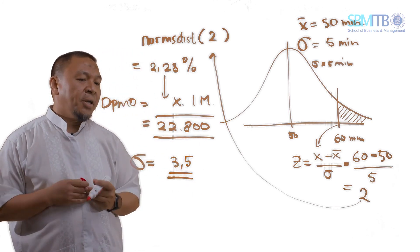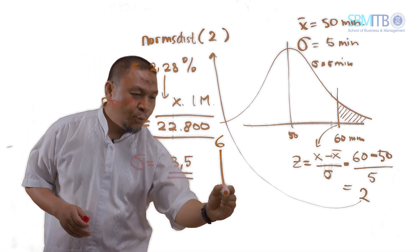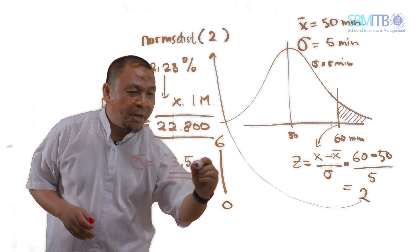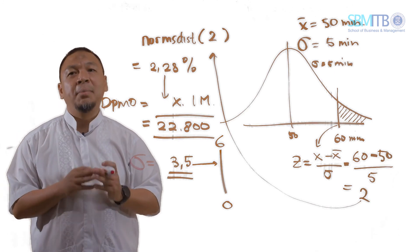That is how we calculate sigma capability. In this case, on a range of 0 to 6, we are at the industry standard. Hopefully this explanation helps you calculate sigma capability. A quality process is one that is both stable — or in control — and capable, measured by capability index and sigma capability. Thank you, that is the end of this video.